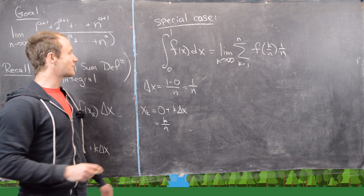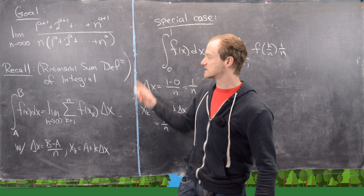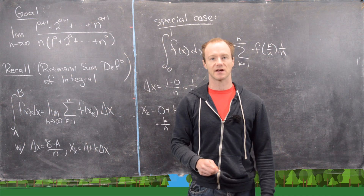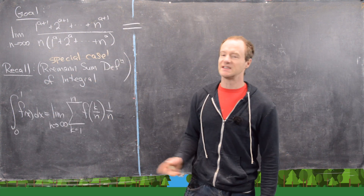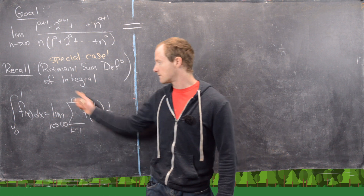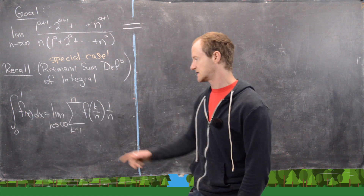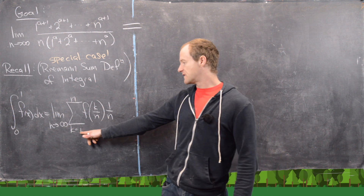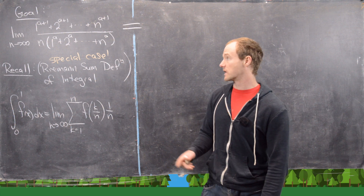Now I'll clean up the board and save this special case over here so we can use it. The integral from 0 to 1 of f(x) dx equals the limit as n goes to infinity of the sum k equals 1 to n of f(k/n) times 1/n. We're going to use that to solve this problem.